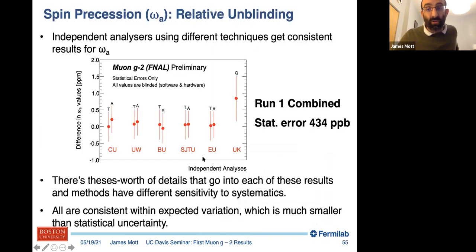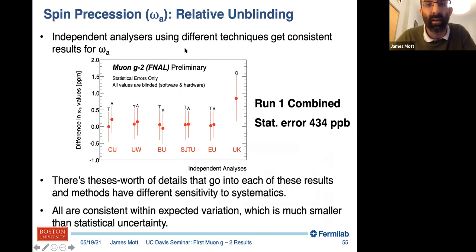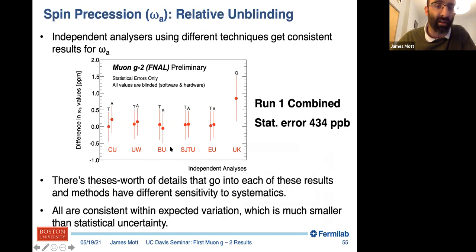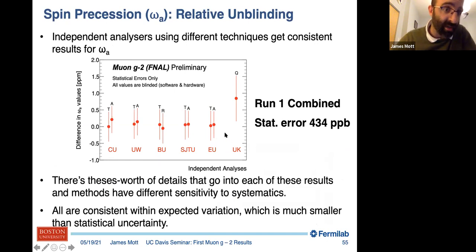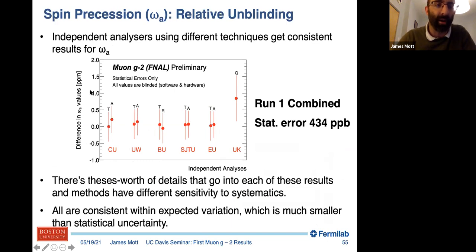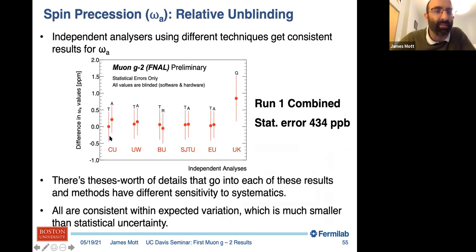Once you've corrected for all the systematics and know what you're doing, you can look at the actual results. Shown here is a relative unblinding for all of the different analyzers — there are six independent analysis groups — showing the difference they each get for their final omega_a value. They are using the same data so are very correlated.